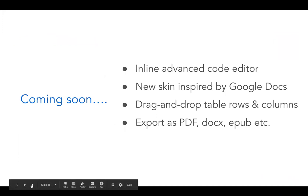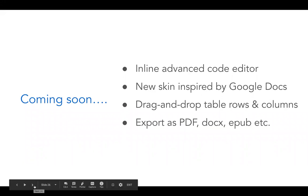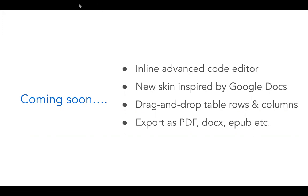In terms of the roadmap for premium features: we'll be bringing the advanced code editor in line with the editor — currently it pops up in its own modal window, and we'll be changing that. We'll be adding a new skin inspired by Google Docs, which is distinct from material design. We'll be adding advanced table functionality such as drag and drop for table rows and columns. We'll also be bringing a tiny export plugin to market with the ability to download content to a number of different formats. Please reach out to us if there are skins, icon packs, or file formats you'd like to see included.